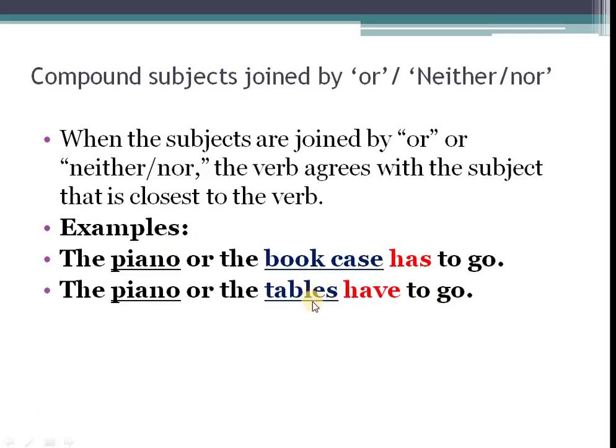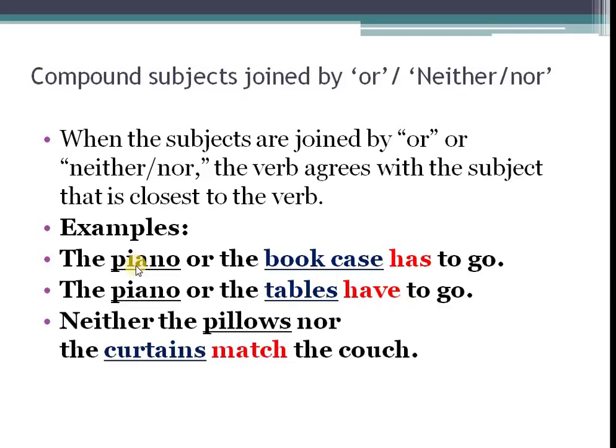Now, let's look at another one. The piano or the tables. Notice, we have once again, piano and tables. However, piano is singular and tables is plural. But we have highlighted the verb that is, I'm sorry, the subject that is closer to the verb, which is tables. And because it is plural, it takes the verb without S. Have.